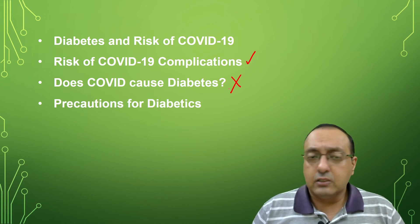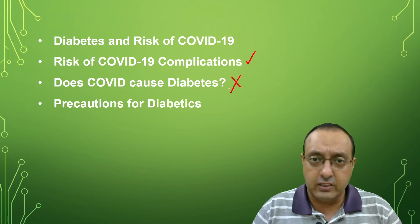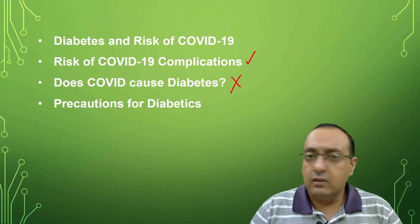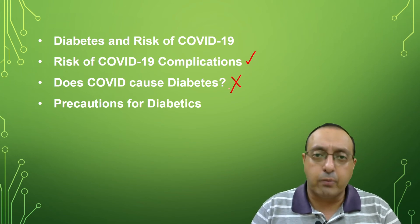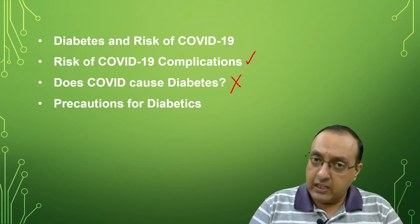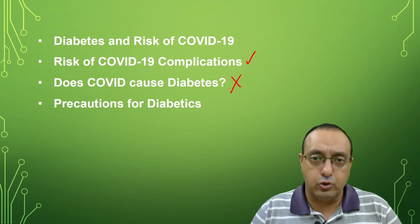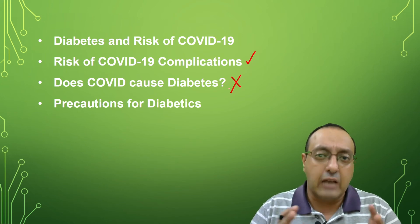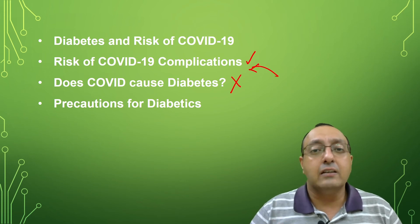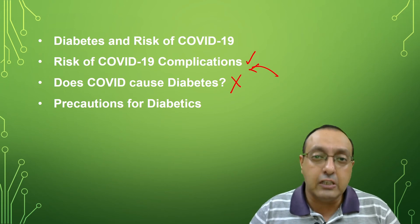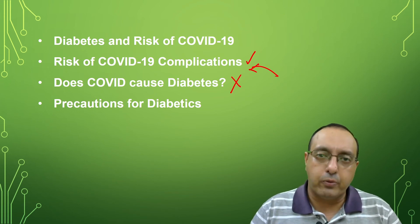What precautions can diabetic people take to prevent exposure to COVID during this pandemic? There are three main precautions, very similar to the normal COVID-appropriate behavior that governments and organizations have been promoting: avoid social gatherings, wash hands frequently, and maintain social distancing. It must be emphasized that diabetics usually have weakened immune systems, which likely contributes to COVID-19 complications and severe illness. So they should be extra careful and almost obsessive about maintaining COVID-appropriate behaviors.